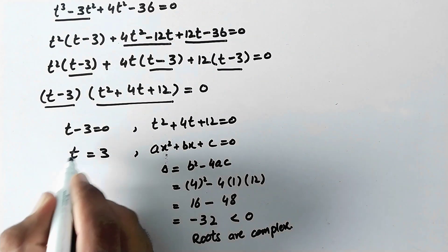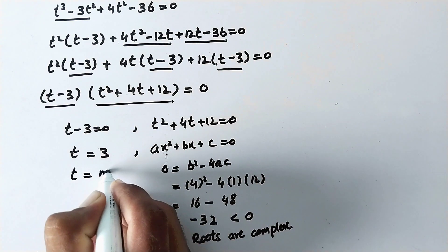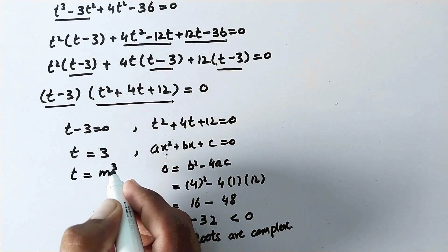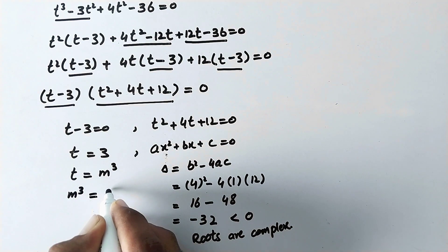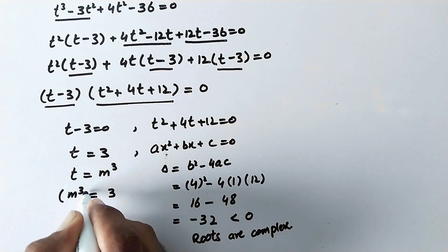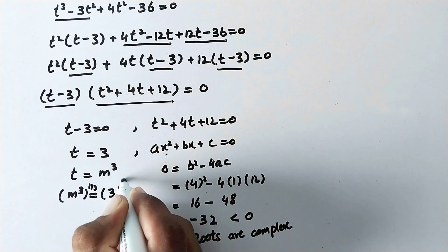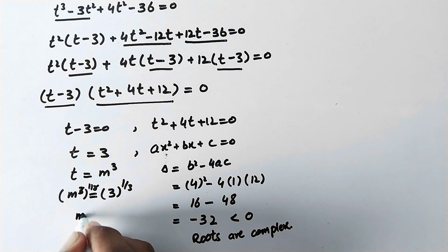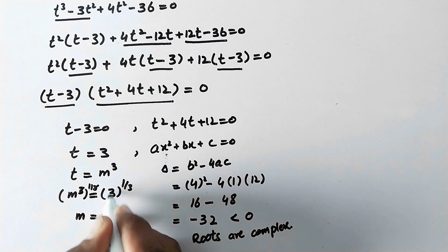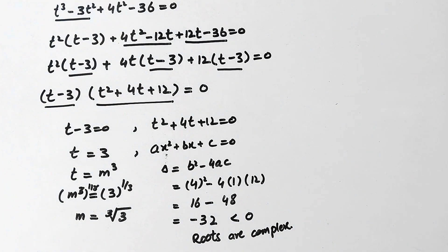We proceed with t equals 3. Since we assumed t equals m cubed, we can write m cubed equals 3. Taking the power of 1 over 3 on both sides, the cubes cancel and we are left with m equals the cube root of 3. That is the value of m.